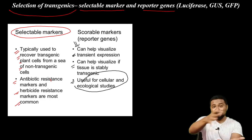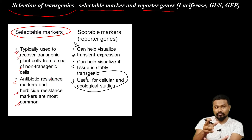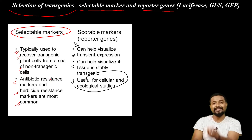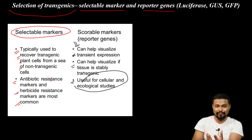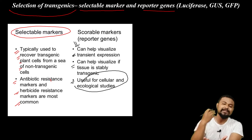What does the scorable marker do for reporter genes? You can transform the scorable marker. The reporter gene is transformed, creating a color change directly for visualization, and you can easily pick up the cell.